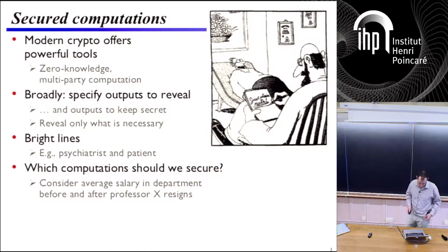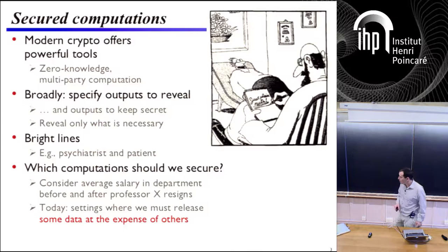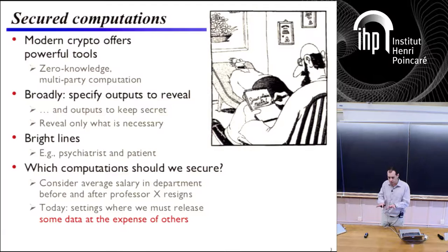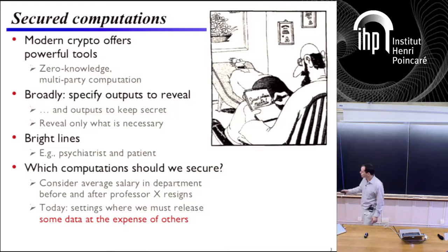That may not be apparent at the time you're designing a protocol for computing the average salary. Presumably, if you're using a secure protocol, it's because you don't want to leak individual salaries. So today, what I'm going to be talking about is a setting where we have to release some information, some data at the expense of other kinds. The first 50 minutes is going to revolve around thinking about how to pin down the question of what information should be available and what should not, and how we try to draw a boundary where we don't have clear bright lines telling us who should know what.